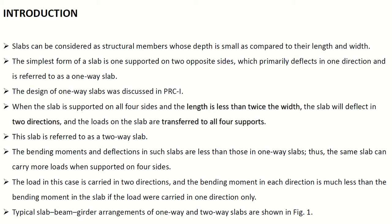The simplest form of a slab is one supported on two opposite sides, which primarily deflects in one direction and is referred to as a one-way slab. In our previous course we already learned the analysis and design of one-way slab systems. When the slab is supported on all four sides and the length is less than twice the width — that is, the length-to-width ratio is less than two — the slab will deflect in both directions, and the load is transferred to all four supports. This slab is referred to as a two-way slab.